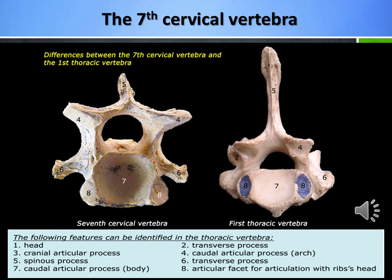The 7th cervical vertebra is quite similar to the 1st thoracic vertebra. However, the characteristic feature of the 7th cervical vertebra is that its body has a costal facet on each side of the caudal articular surface of the body. Meanwhile, the 1st thoracic vertebra has similar costal facets but on both the cranial and caudal surfaces of the vertebral body.